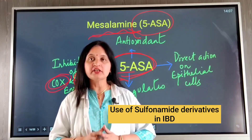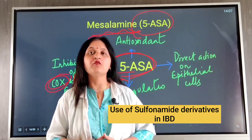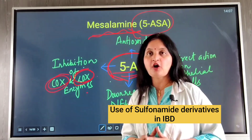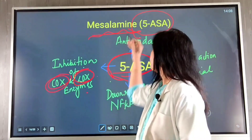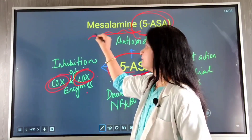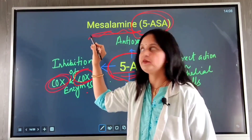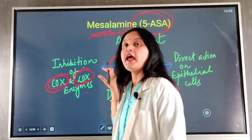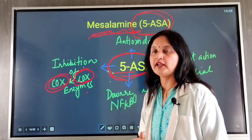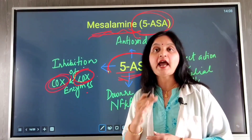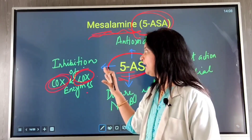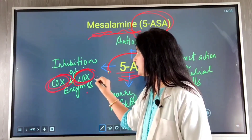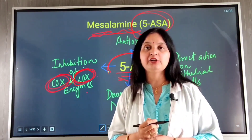Now that we have learned about the pathogenesis of inflammatory bowel disease, let's move on to drug therapy. The first-line treatment for the management of mild to moderate ulcerative colitis and Crohn's disease is 5-aminosalicylic acid, also known as mesalamine. It is the first-line treatment for the management of ulcerative colitis and Crohn's disease.